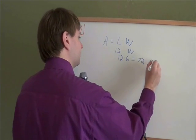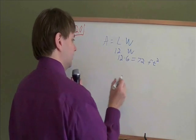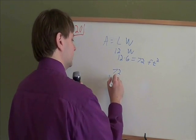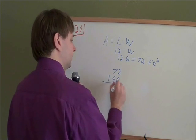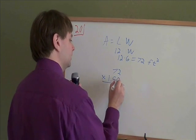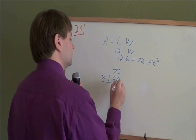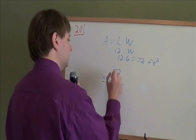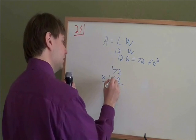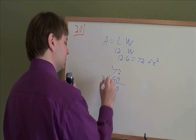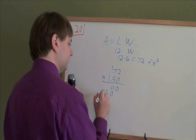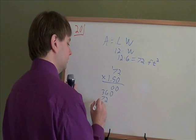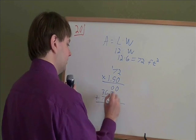And then once we have how many square feet we have, we just multiply that by the price per square foot. So, we need 72 times 150. And then it's just a matter of multiplying. 0 times 2 is 0. 0 times 7 is 0. 5 times 2 is 10. So, put a 0 down and carry the 1. 5 times 7 is 35. Plus 1 is 36. 1 times 2 is 2. 1 times 7 is 7. And we add all those up.